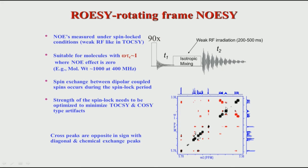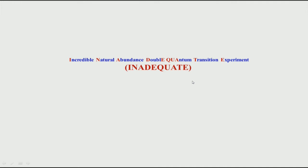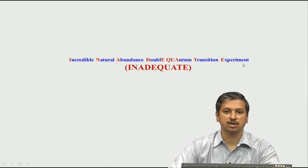This brings us to the end of the ROESY part. We will look at one last 2D experiment before moving on to heteronuclear experiments. That is another 2D homonuclear experiment known as INADEQUATE — a very interesting acronym — which stands for Incredible Natural Abundance Double Quantum Transition Experiment.